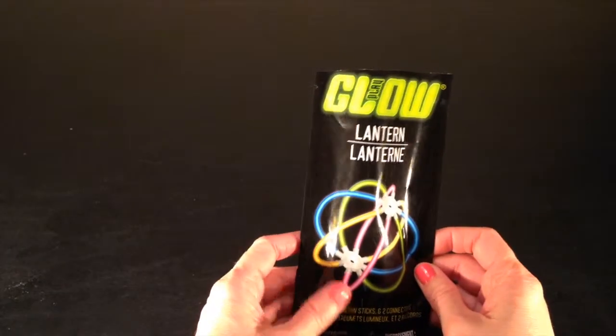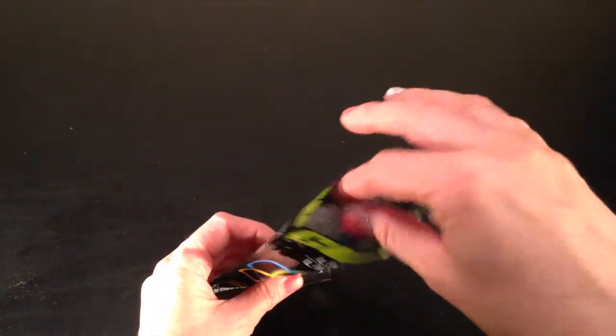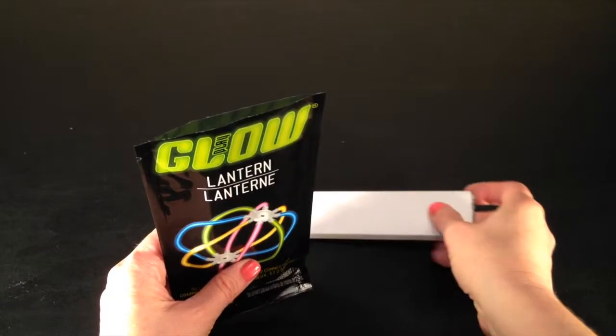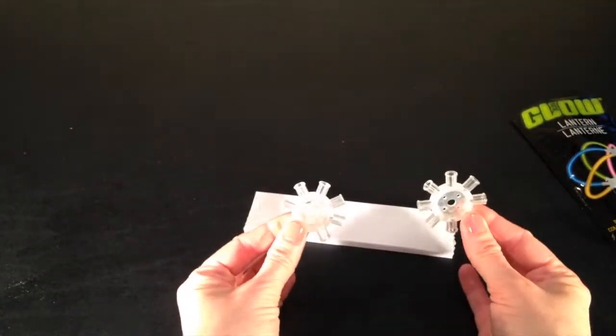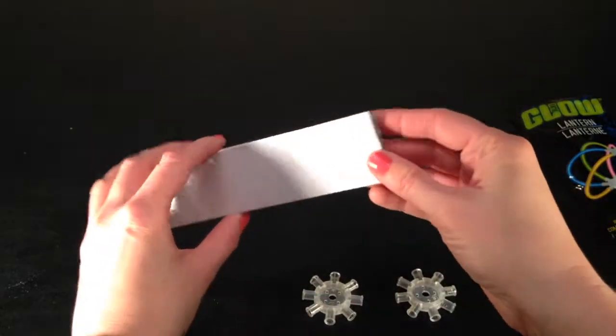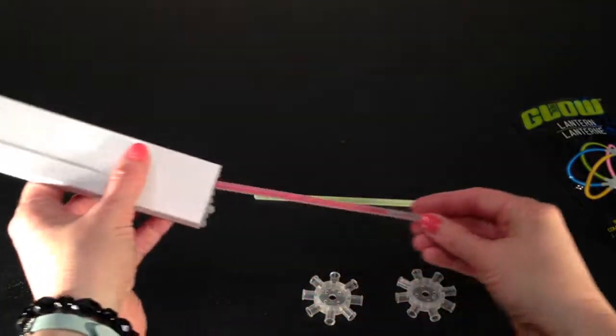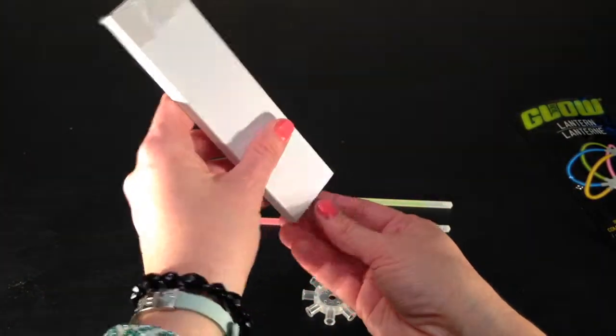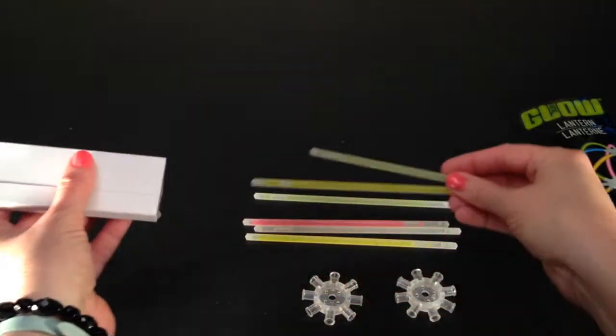Okay, now that we have our package open, let's take out the pieces and see what we have to work with. We have these two pieces which are going to be our connector pieces, and then we have all of our glow sticks that we're going to use to make our glow stick lantern or ball.